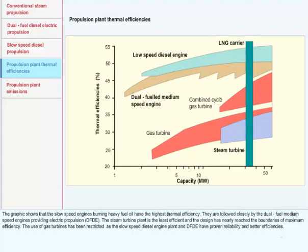The use of gas turbines has been restricted as the slow speed diesel engine plant and DFDE have proven reliability and better efficiency.